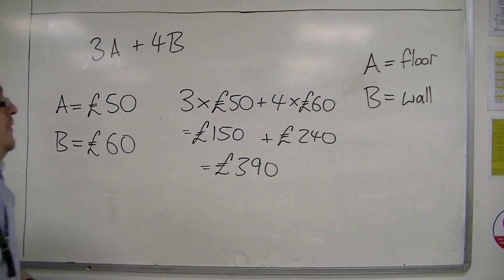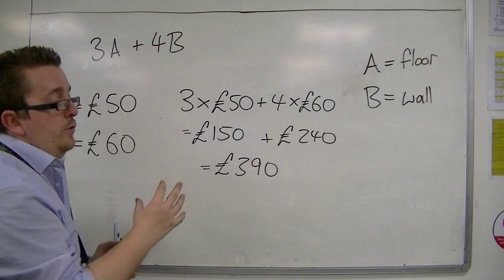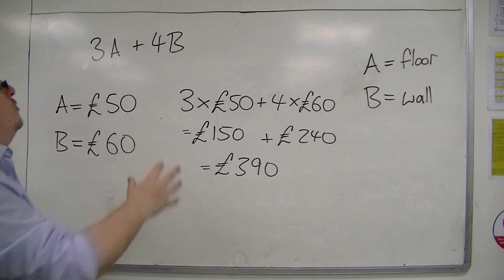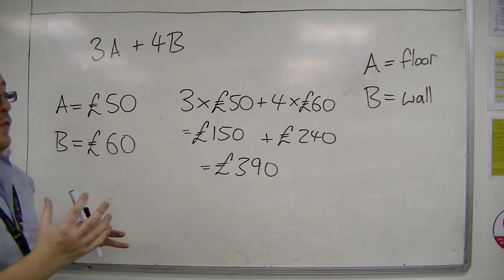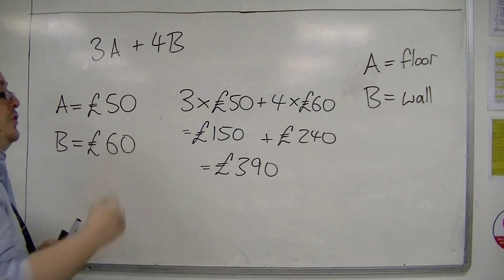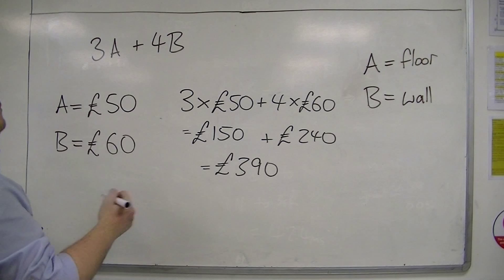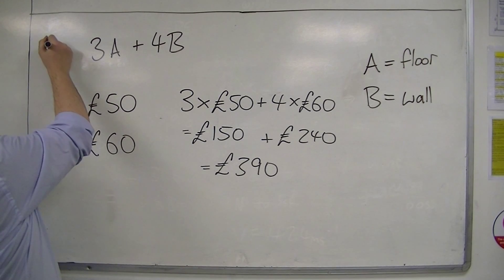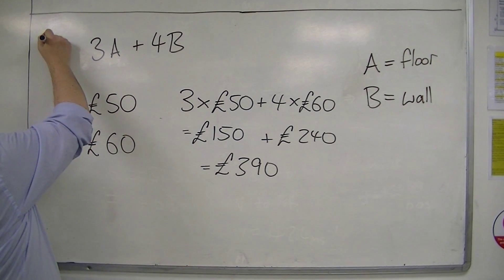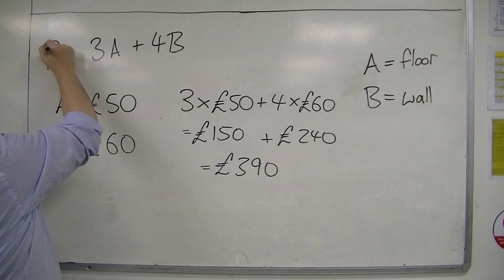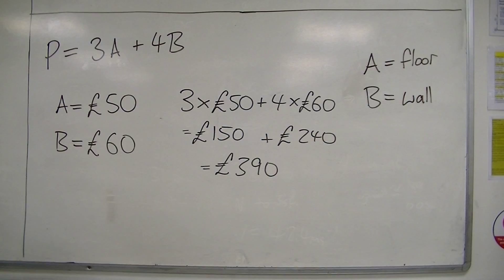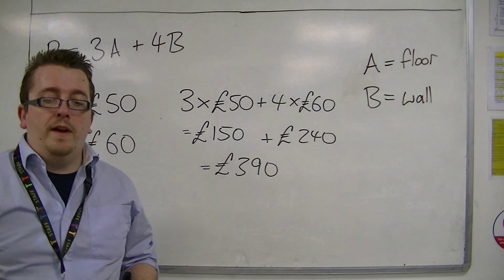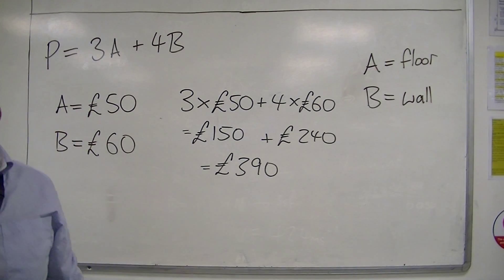This is how we can use algebra to substitute into what we could call a formula. So we could call this price 3A plus 4B — the combination of A's and B's.